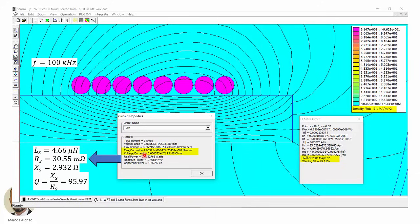And this is the voltage over current, so the impedance of the circuit. From here we can get the series resistance, 30.55 milliohms, the reactance, and from the reactance and from the resistance, we can get the quality factor, which now is 95.97, which is much more similar to the expected value that we know from the data sheet.